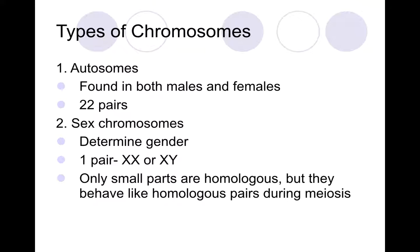So what are some types of chromosomes? We have two different types. First are what we call autosomes, and these are found in both males and females — in human beings there are 22 pairs of those. To make up the 23 total pairs, we have those 22 plus one more pair of sex chromosomes, which determine our gender. Only small parts are homologous but they behave like homologous pairs during meiosis. XX is a girl, and getting an X from your mom and a Y from your dad makes a boy.